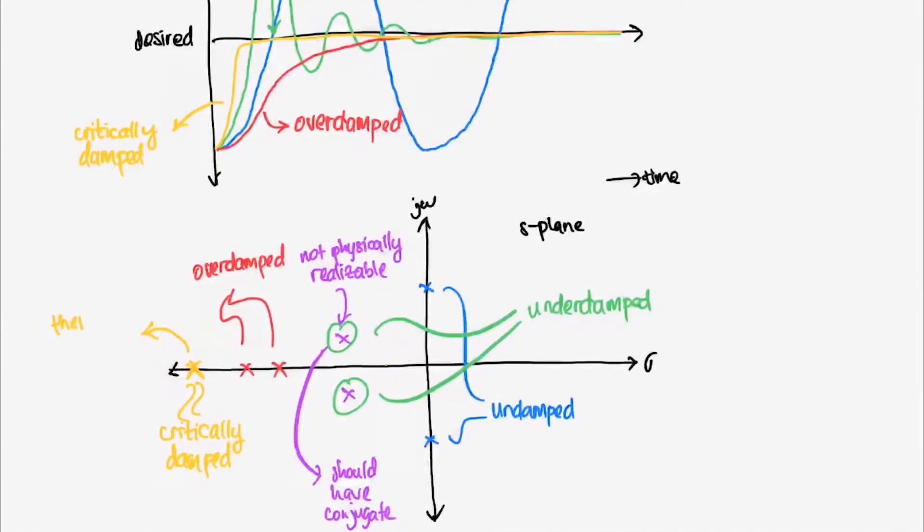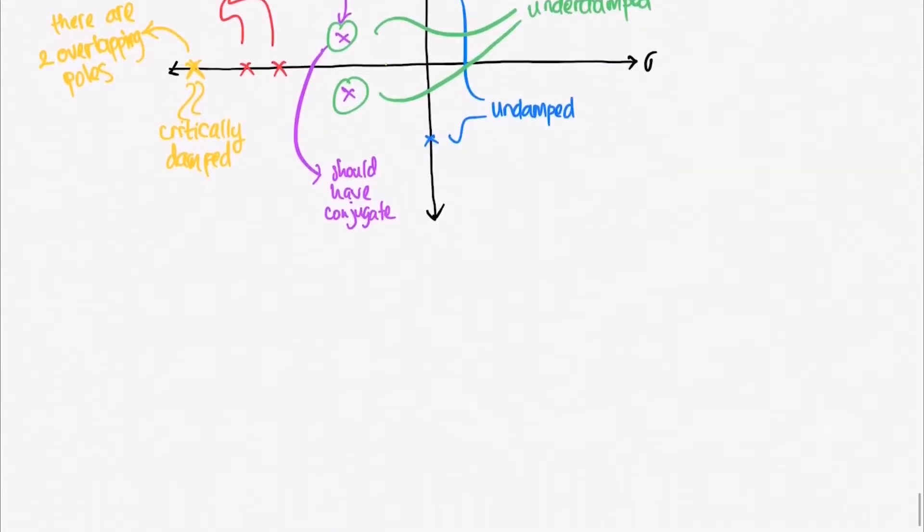What makes over-damped and critically-damped different is overlapping. Over-damped response poles do not overlap, while critically-damped response poles overlap. That was response types. Now we move to response specification.